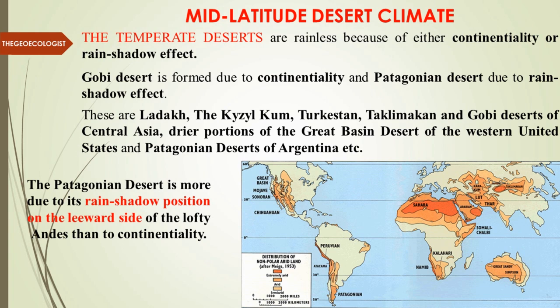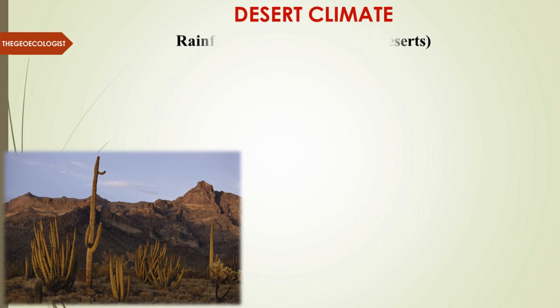There are three major reasons for desert formation. First is continentality — interior location within continents. Second is the rain shadow effect. Third is the leeward side — if a mountain range is in between, the other side receives no rainfall. Trade winds are also a key contributing factor alongside the geological impact.